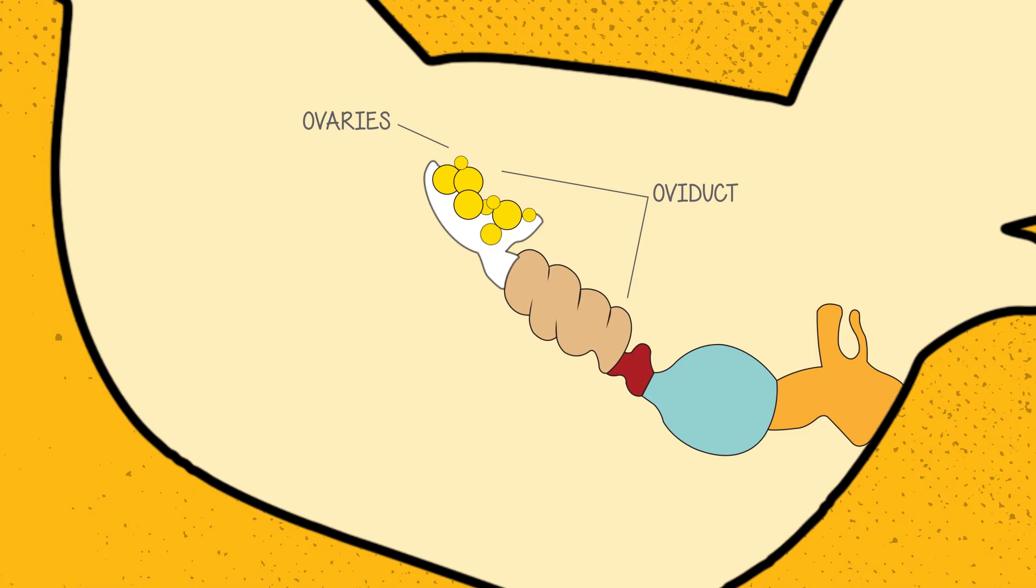They start in the funnel-shaped infundibulum and move to the magnum. This is where the egg white or albumin develops. In the isthmus, the shell membrane is formed.